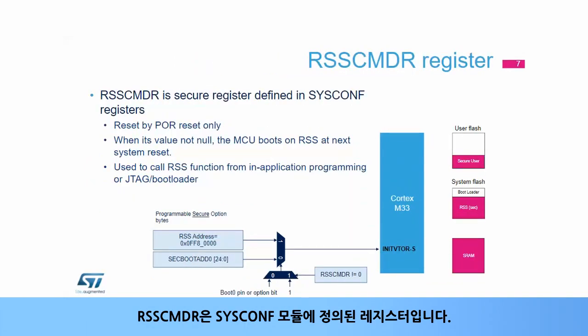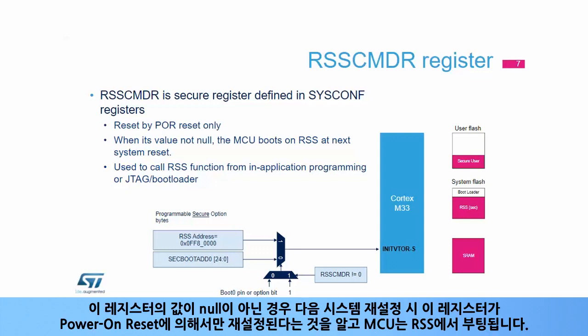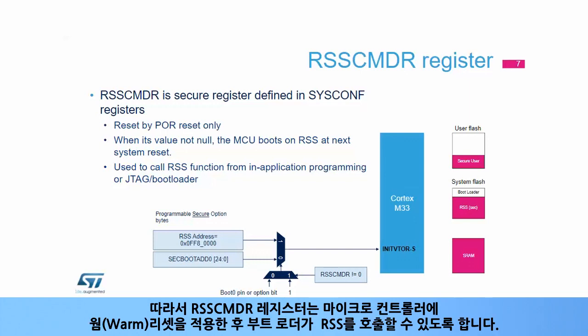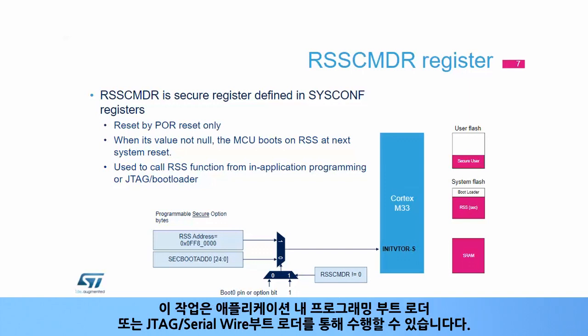RSS_CMDR is a register defined in the SYSCONF module. It is used to pass a command to be executed by the RSS when the value in this register is non-null. The MCU will boot on RSS at the next system reset, knowing that this register is only reset by a power-on reset. Therefore, the RSS_CMDR register enables a bootloader to call RSS after applying a warm reset to the microcontroller. This can be done by an in-application programming bootloader, or a JTAG or serial wire bootloader.